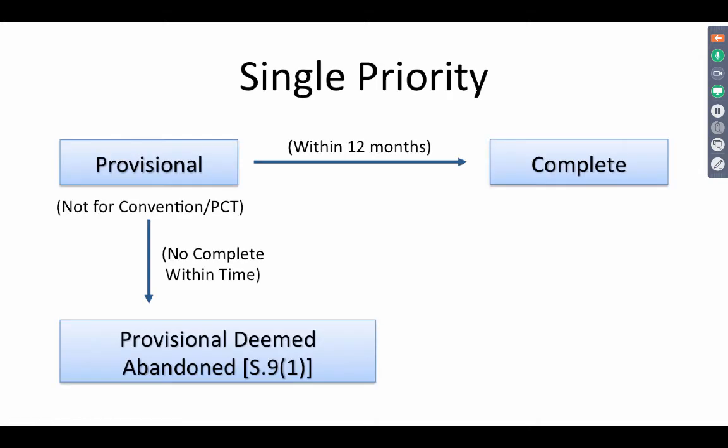Specification timelines: when a provisional is filed and within 12 months of filing the provisional, you file a complete — provided the provisional is not filed in pursuance of a convention or a PCT application — then the priority of the complete, if the claim is fairly based on the provisional, comes from the provisional. This is called a single priority. A complete filed within 12 months, where priority is fairly based on the provisional, gets the priority from the provisional.